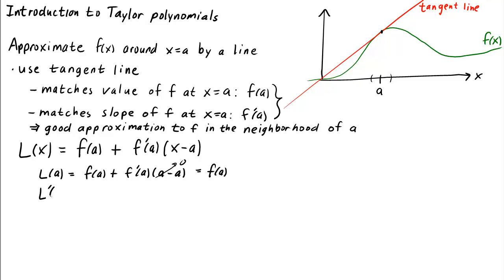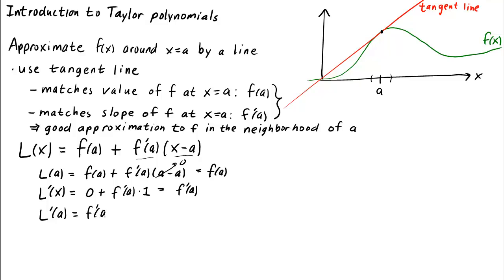Let's calculate the derivative, l prime of x. If we differentiate l with respect to x, the first term goes away because it's a constant. So we get zero plus f prime of a — again, a constant — times the derivative of x minus a, which is just one. So the derivative of l is just the constant f prime of a. That makes sense because l is just a line with constant slope. In particular, the derivative evaluated at a is that same constant f prime of a. So l of x matches the slope of f at a.